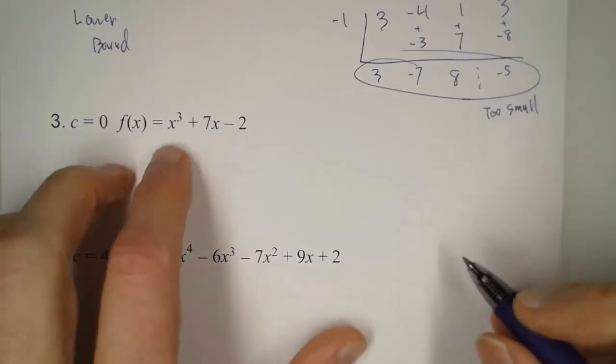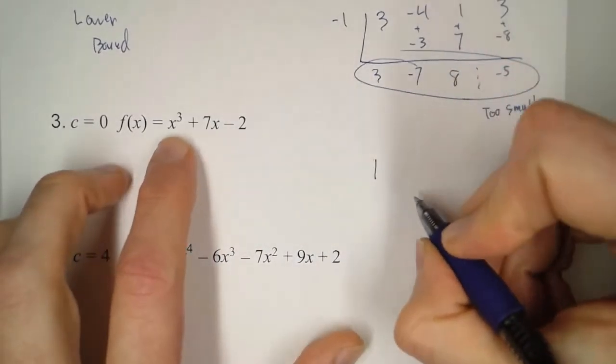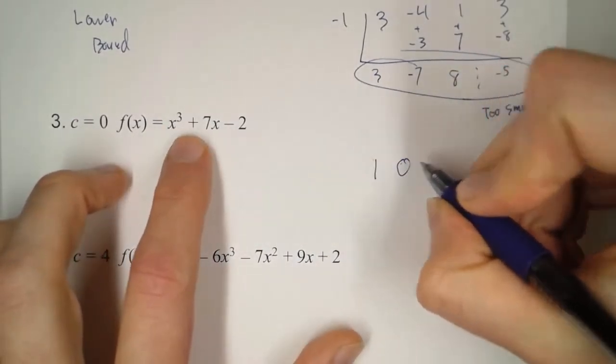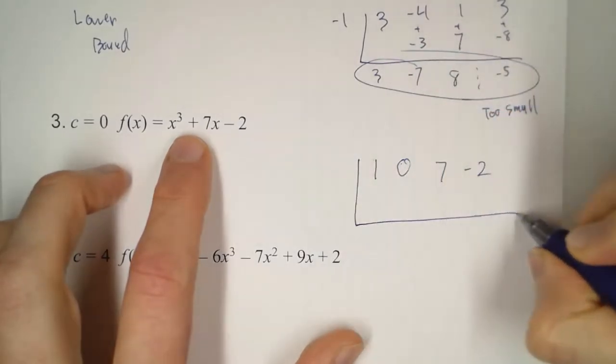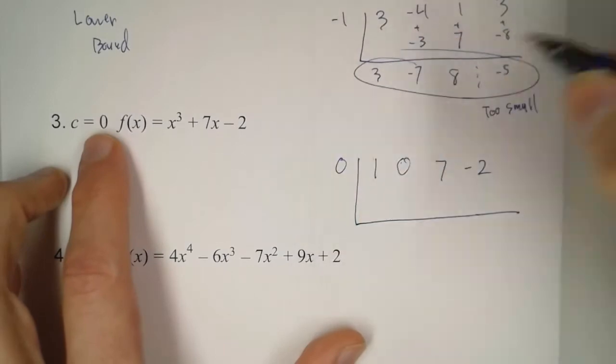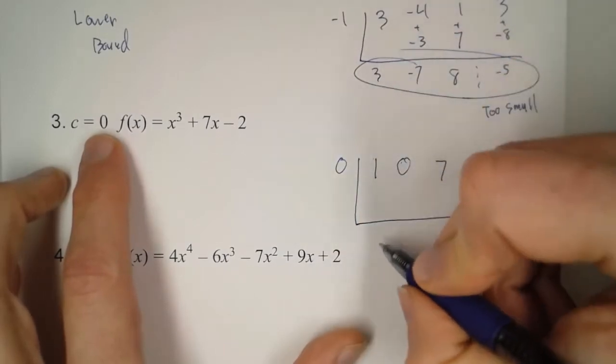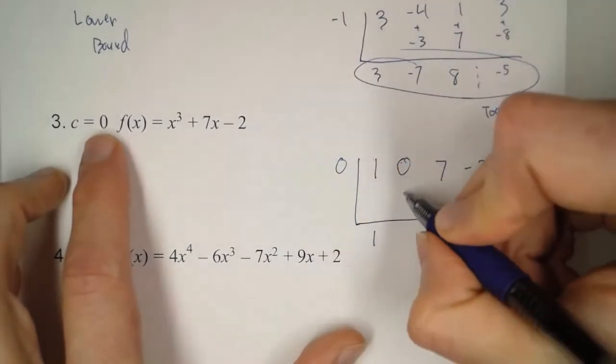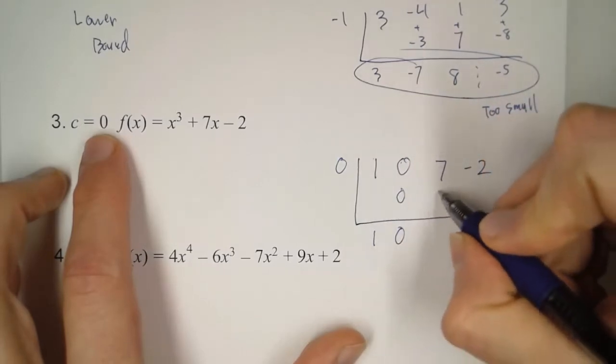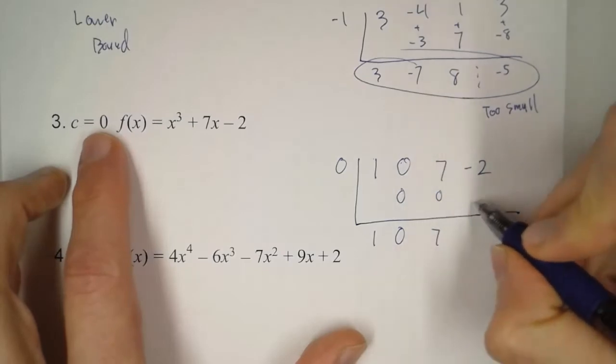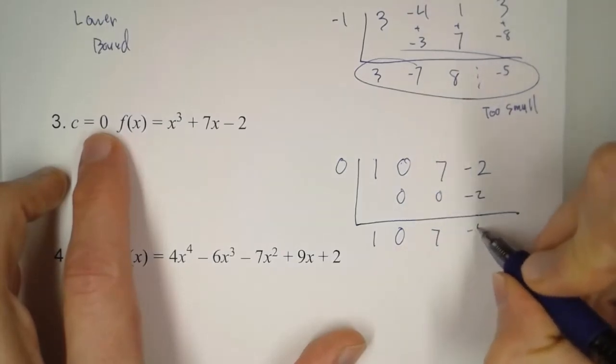Number 3. Here we have x cubed, so that's a 1. There's no x squared term, so we have to put a 0, and then a 7, and then minus 2. So we're trying 0. So let's see what this gives us. So we have 1 times 0 is 0. 0 times 0 is 0. 7 times 0 is 0. We get negative 2.